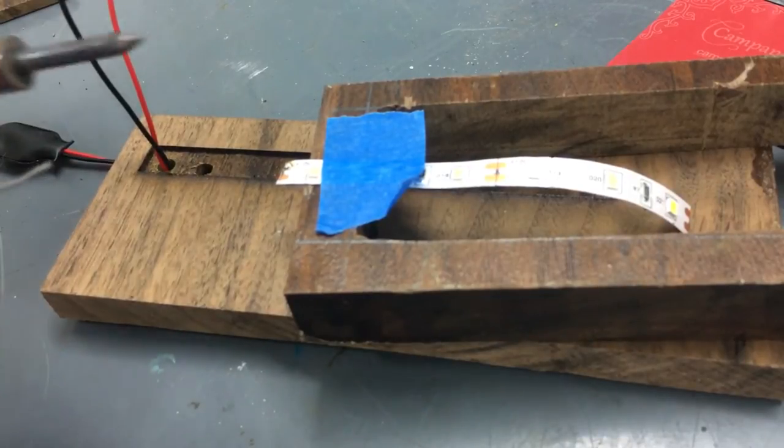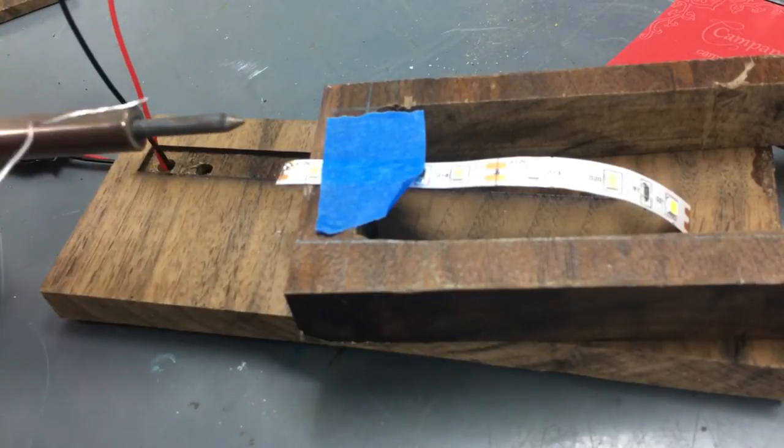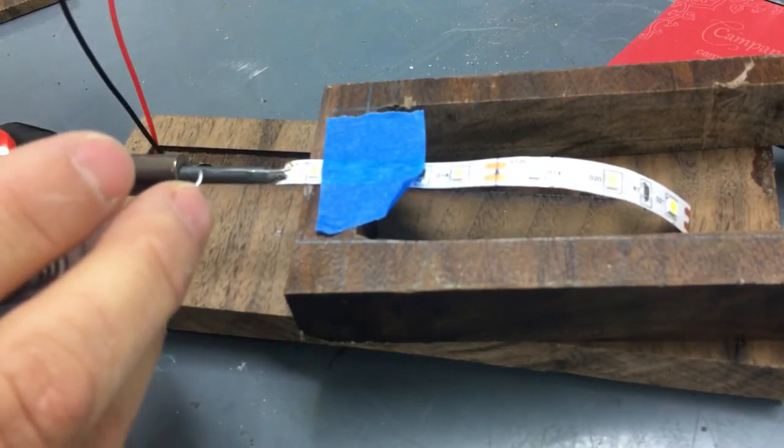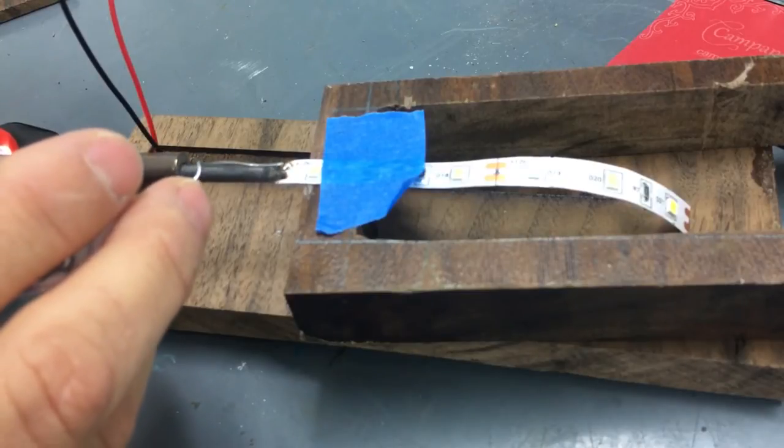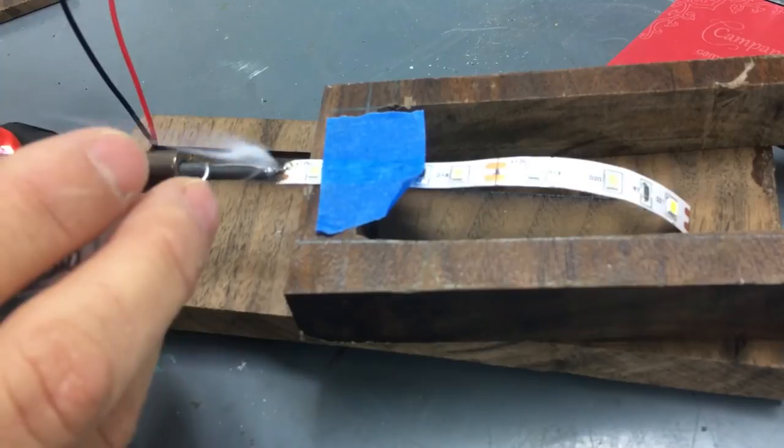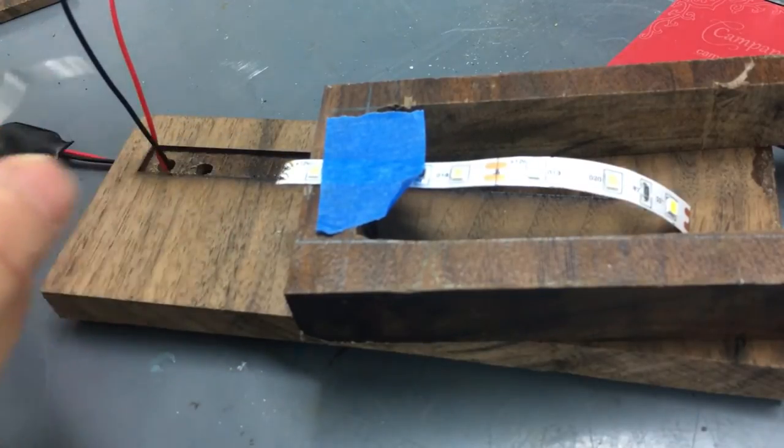You want to heat the receiving part. You want to get that nice and hot, but not too hot to ruin the electrical connection in there. But you do want to get it hot, and then you put a little dab of solder on there. Perfect!